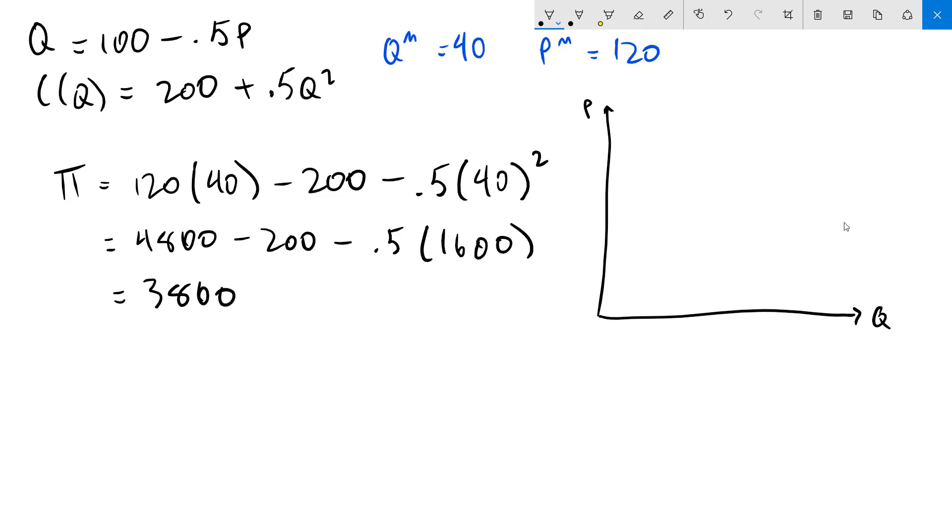Recall that our inverse demand function was 200 minus 2Q. So I'm going to draw that in first. The demand curve is going to hit the quantity axis at 100 as we can see right here. I'm then going to draw my marginal revenue curve which remember has double the slope of the demand curve. That means the marginal revenue curve will hit the horizontal axis here at 50.